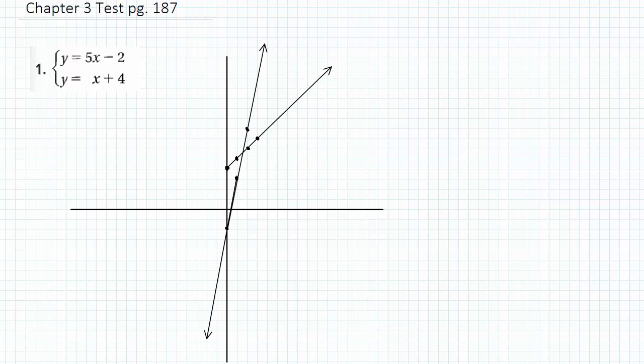And where these lines intersect, it seems to not be a whole number, but it seems to be in the center of a box. So it seems to be between 1 and 2, between 5 and 6. So I would guess it's 1.5 and 5.5. So solving by graphing, not great if the numbers aren't whole numbers.